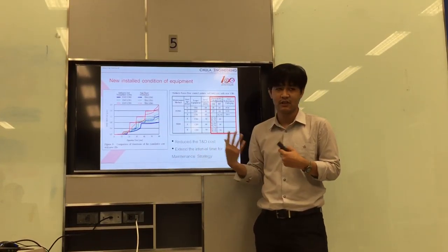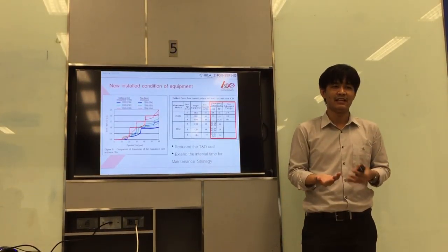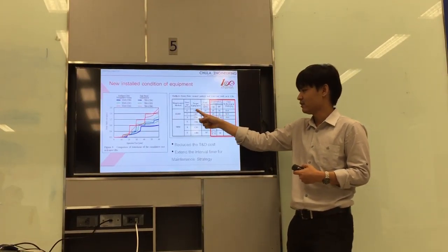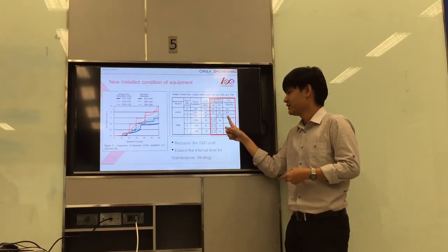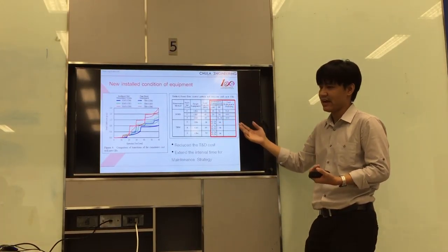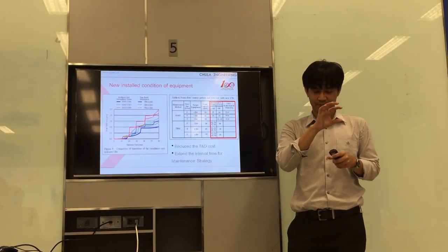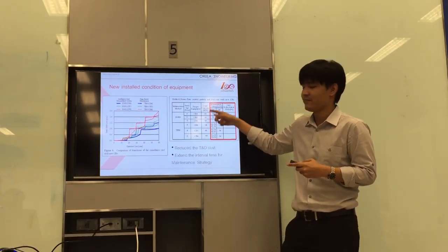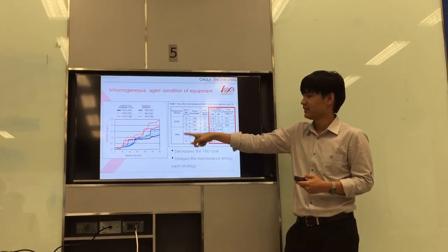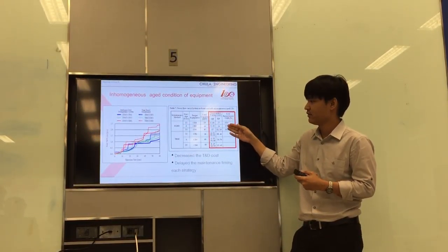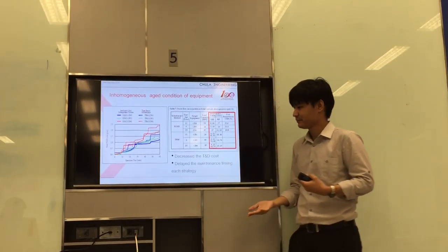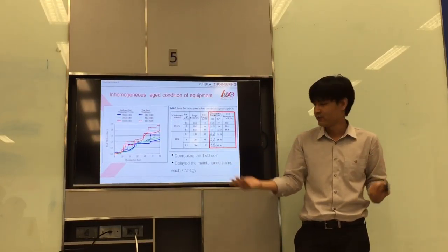The result from the first case — new installation equipment — compares IGMS with conventional maintenance. As you can see, the cost is compared for each circuit breaker. The cost is reduced for circuit breaker four by around 30%, circuit breaker five by 20%, and circuit breaker six by 15%. Also, the number of maintenance activities such as overhaul and replacement are reduced. This means the asset maintenance period can be extended because the conditions of each equipment differ. In the same way, for the inhomogeneous age conditions where circuit breakers do not start from age zero, the costs are decreasing: circuit breaker four is around 25%, circuit breaker five is 23%, and circuit breaker six is around 20%. It can also delay the time of maintenance, similar to the new equipment case.